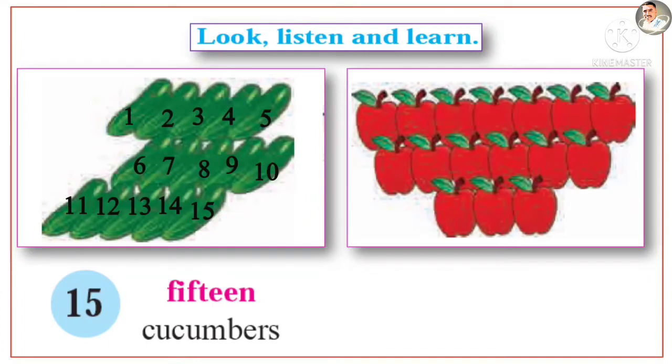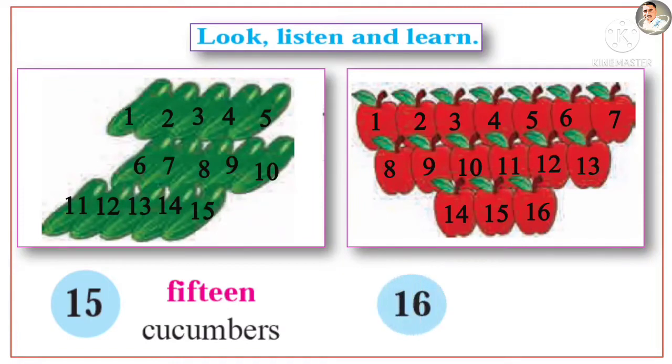How many apples are there? 16. Sixteen. S-I-X-T-E-E-N. 16 apples.